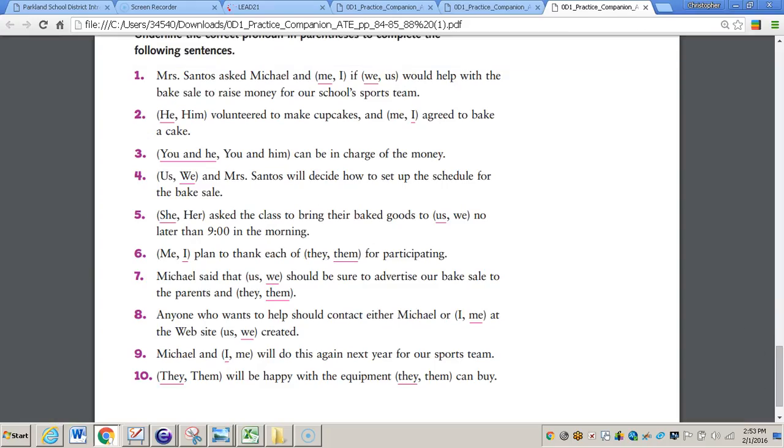So for number three, it says you and he can be in charge of the money. Number four, we. Number five, she and us should be underlined. Number six, them.